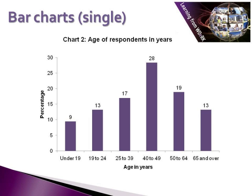This slide here shows an example of a single bar chart. We can see at the top we have a title which tells us what the bar chart represents. On each axis we have a label. So we have a chart that looks at the age of our survey respondents in years. Along the bottom horizontal axis we have our respondents' age in years represented by a percentage, going from under 19 on the left all the way up to age 65 and over on the right. So you can see here we have an ordinal variable — it has categories but they're ordered.